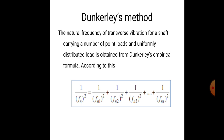There is a method called Dunkley's method to measure the natural frequency of a particular shaft carrying point loads and uniformly distributed loads. It is obtained from Dunkley's empirical formula: 1/fn² = 1/fn1² + 1/fn2² + 1/fn3² + ... up to infinity, meaning we take the reciprocal of each individual frequency squared and sum them.